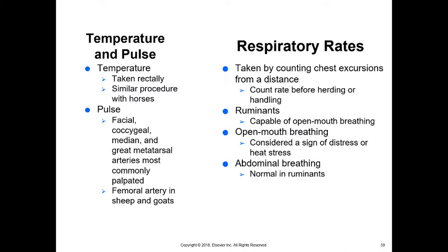Temperature is taken the same way as in horses. For pulse, we use the facial or coccygeal artery (underneath the tail), or the median or great metatarsal arteries. In smaller sheep and goats, we can use the femoral artery, just as with smaller dogs or cats. Respiratory rates should be counted from a distance before handling. Ruminants are capable of open-mouth breathing, but it's usually a sign of distress or heat stress. Abdominal breathing using abdominal muscles is normal in ruminants but not normal in horses.